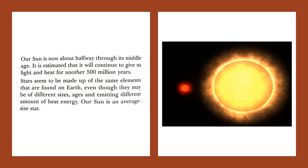When the stars burn all the hydrogen in its core, they begin to die. Slowly the hydrogen gas which is present in the stars dies off. Our sun is now about halfway through its middle age and it is estimated that it will continue to give us light and heat for another 500 million years. The sun has reached middle age and will emit light and heat for at least 500 million more years.